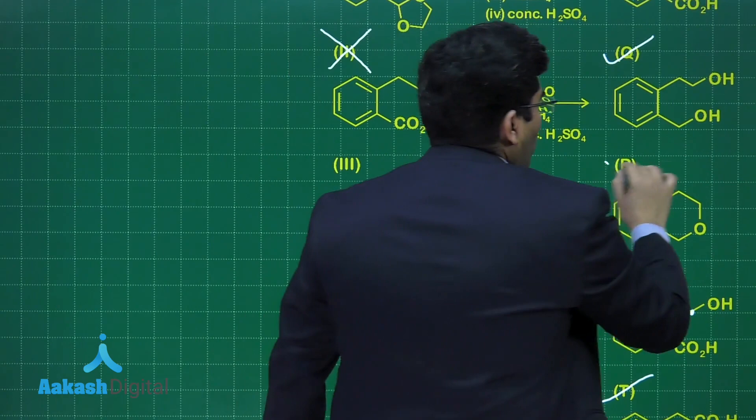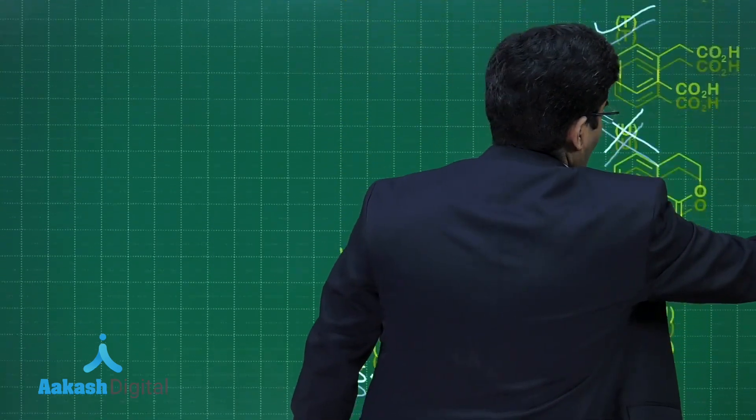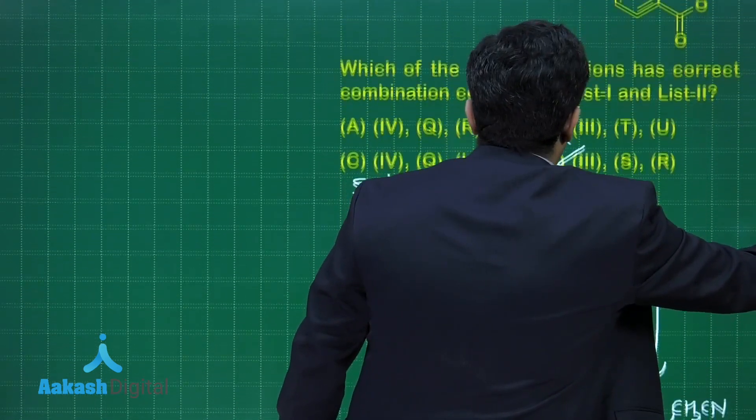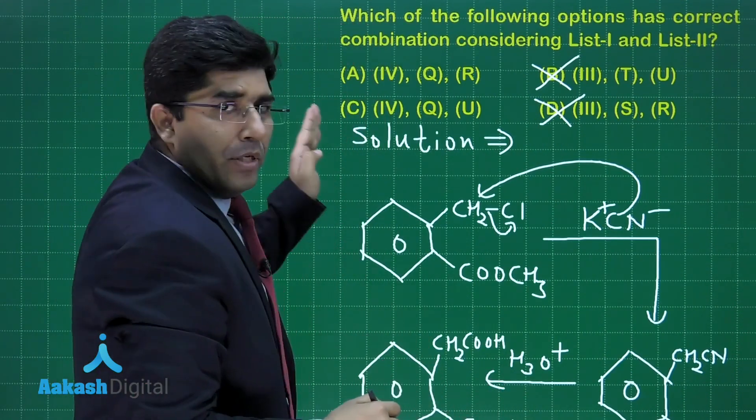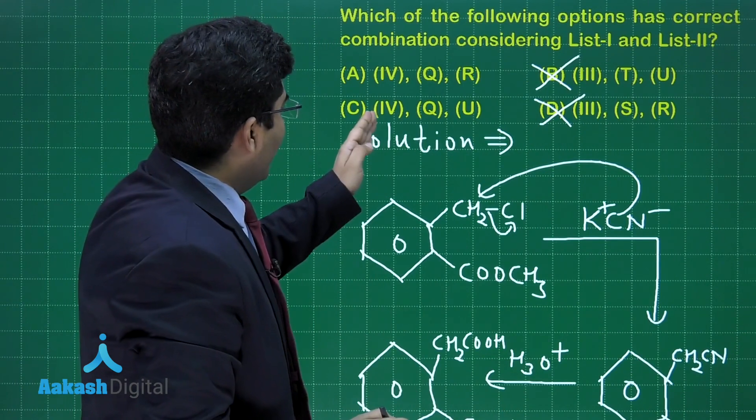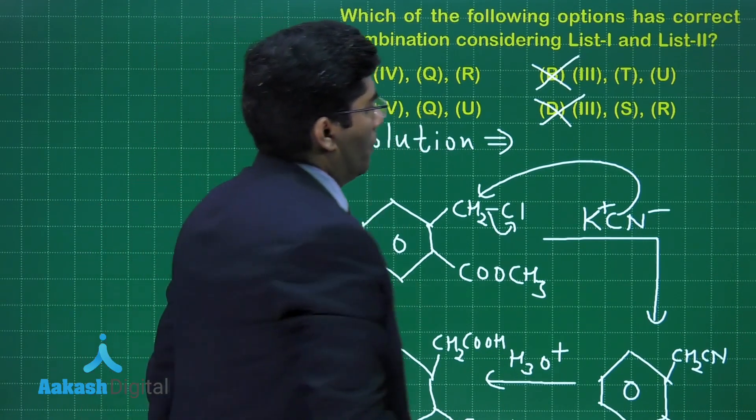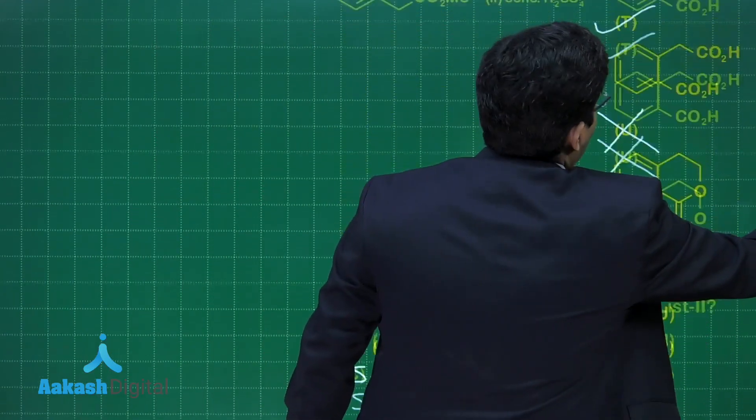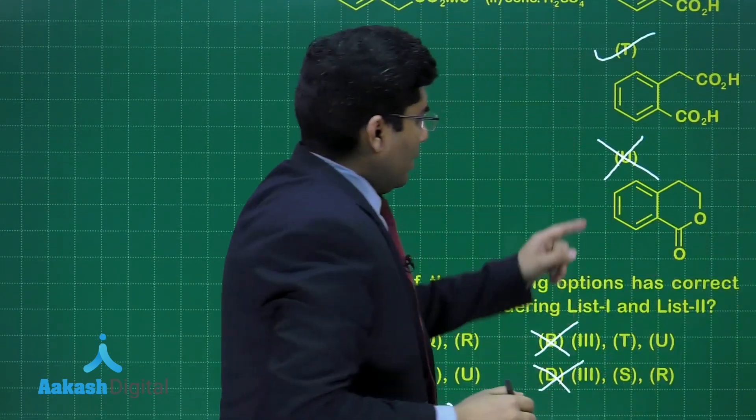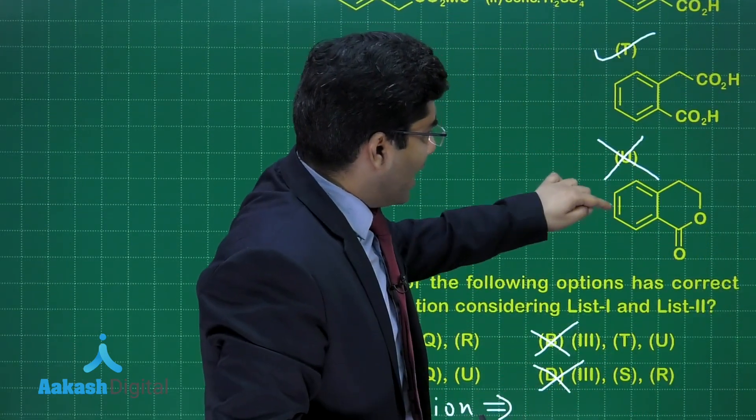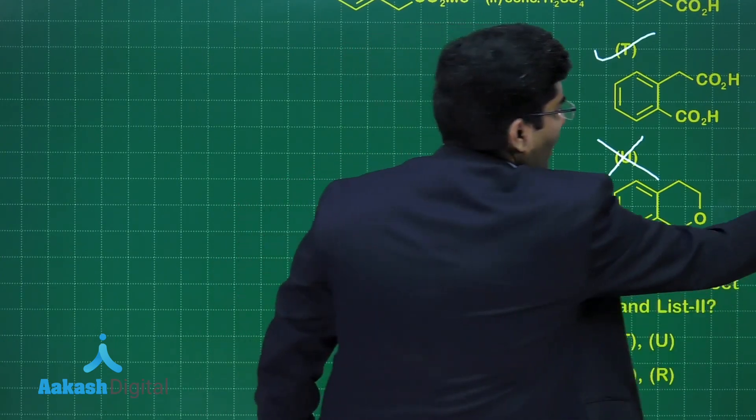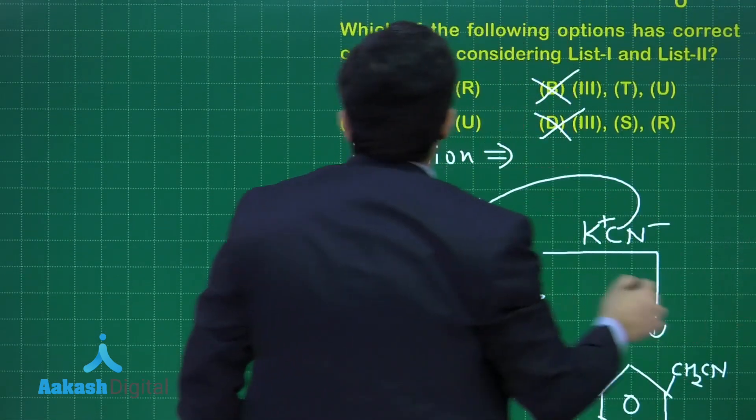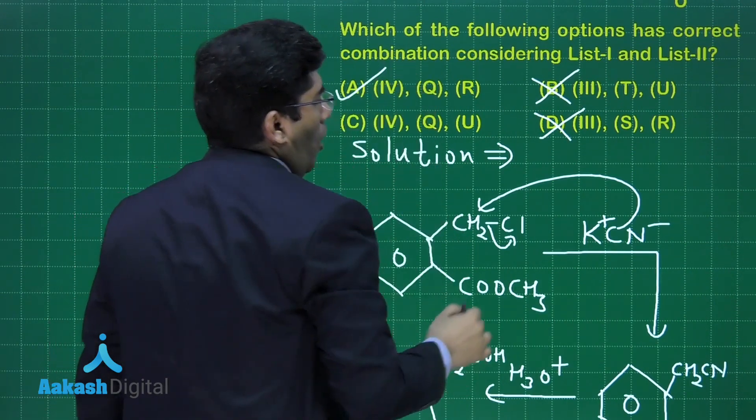Q and R both are forming in this reaction. If you talk about the C option, in the fourth reaction he is saying that Q and U will form. U is benzene ring having cyclic ester attached to it. It will not form in the fourth reaction. That means our answer will be option A.